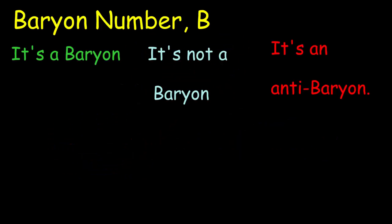We'll start with the baryon number. If our particle is a baryon, we give it a baryon number of one. If it's not a baryon, if it's a meson or a lepton or something else, we give it a baryon number of zero. And if it's an antibaryon, like an antiproton, we give it a baryon number of minus one.